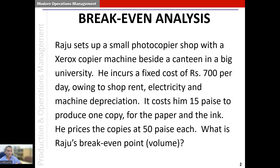Here we see two types of costs mentioned. The first is called the fixed cost, given to us as 700 rupees per day. The fixed cost refers to the expenditure that is incurred even when the production volume is zero — it doesn't depend on how much is produced. The second cost is 15 paise per copy, where the total cost depends upon how many copies are produced, so this cost is called the variable cost.